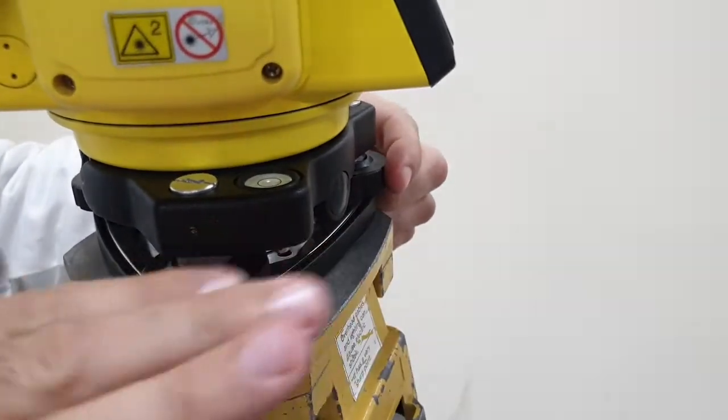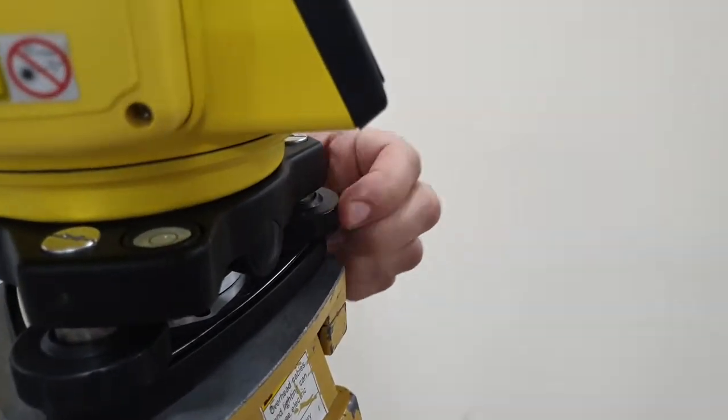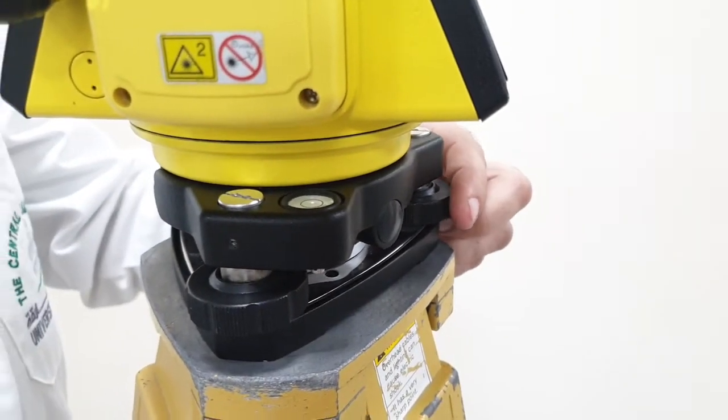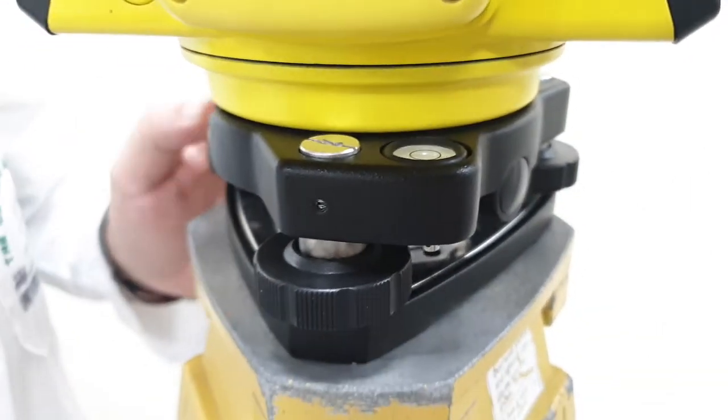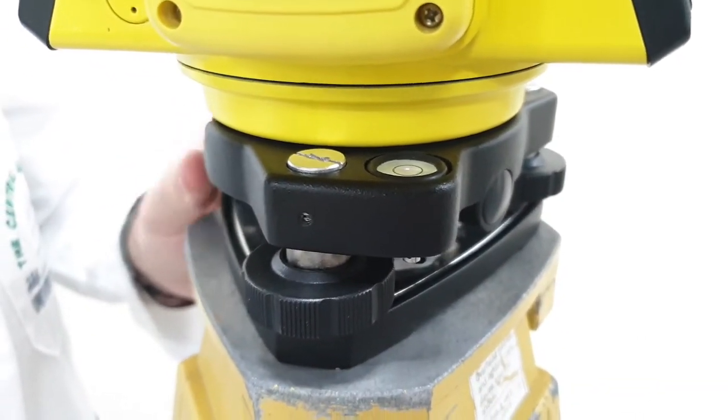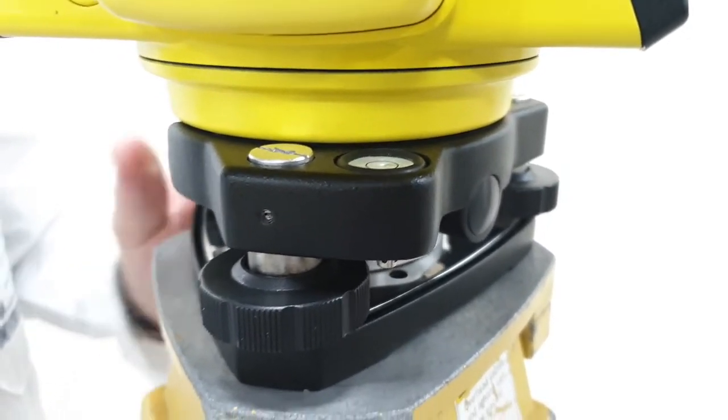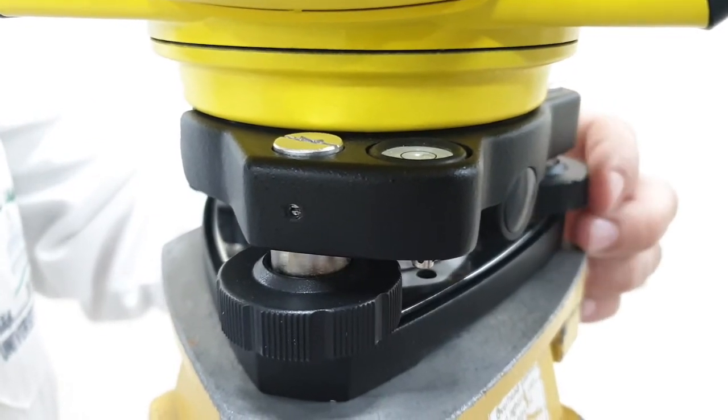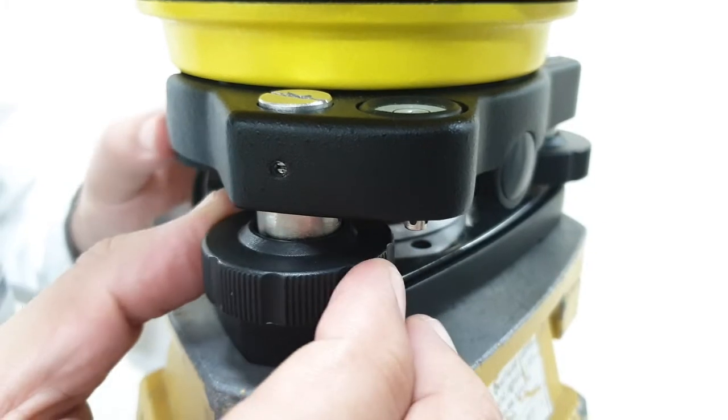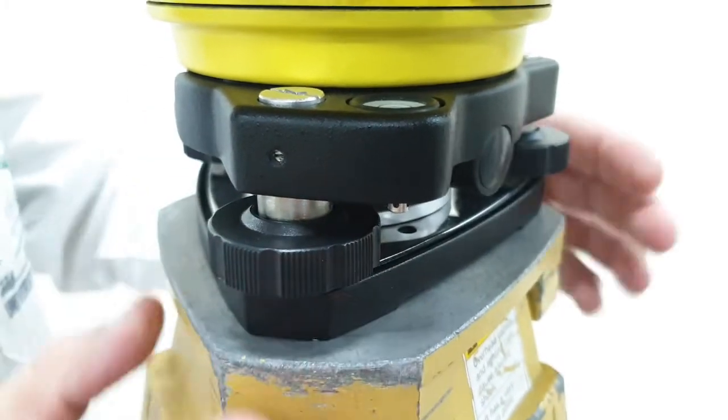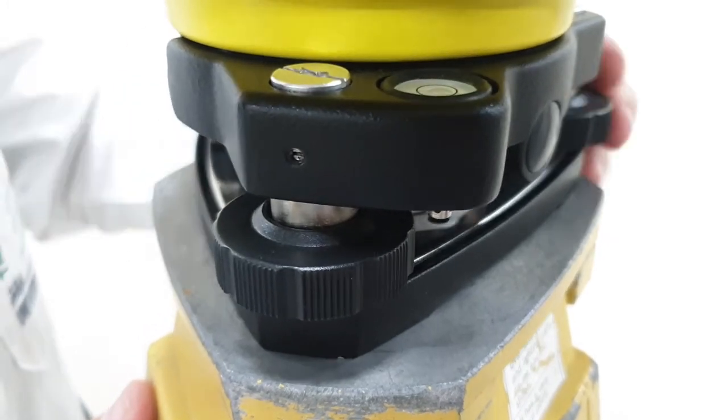We start first by leveling the bubble correctly. That side is high so we lower this screw counterclockwise. Now the bubble is going between these two so I start lifting this screw. Now I start lifting. Let me just lower these two.